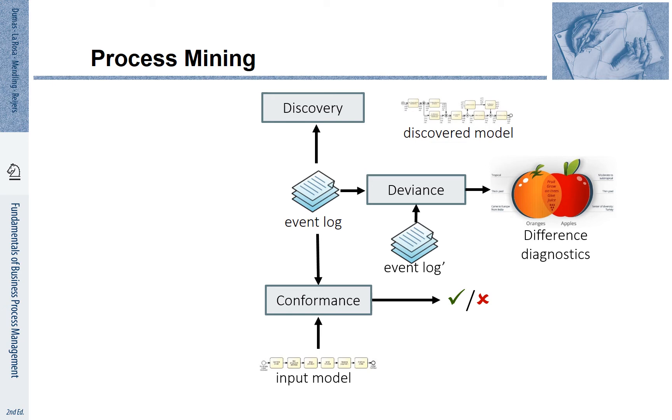We can also take event logs as input for deviance analysis. You see here that we have event log and event log dash. This means that we can, for example, split the event log by half by considering a certain attribute, for example, if cases have been running late or not. Deviance analysis helps us to understand the differences between these two parts of the event log. In this way, we can identify characteristics that distinguish fast cases from cases that run late.